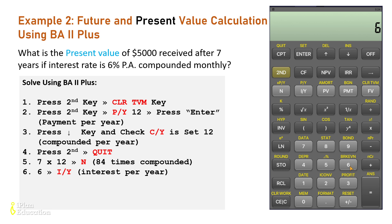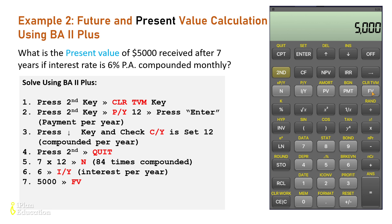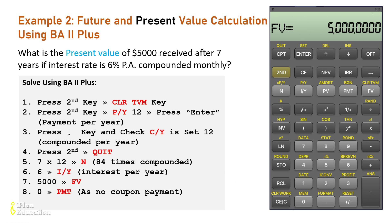Now input the future value: press 5000 and then FV — do not press PV here because we need to calculate PV. Then enter the payment amount, which is zero. Press zero and then PMT.